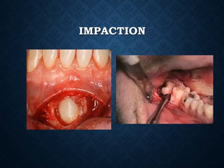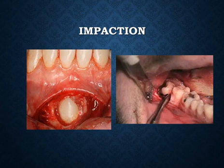Impaction occurs when eruption is completely blocked by other teeth due to crowding. It tends to affect the last teeth to erupt in each segment, such as the canine or the third molar (wisdom tooth).